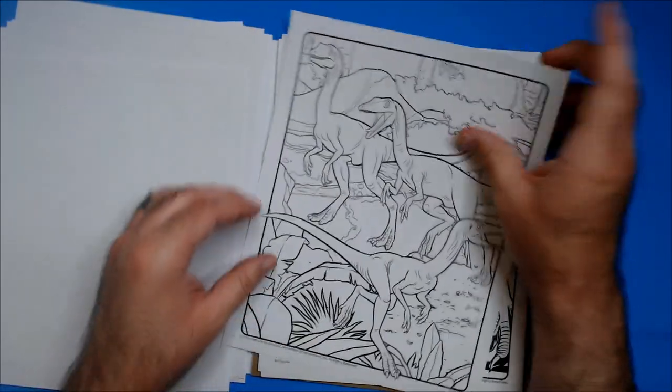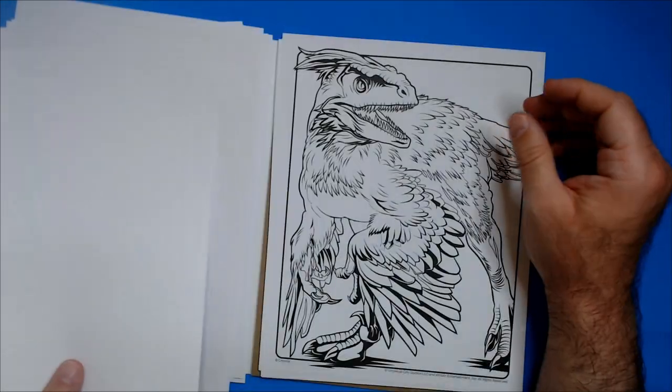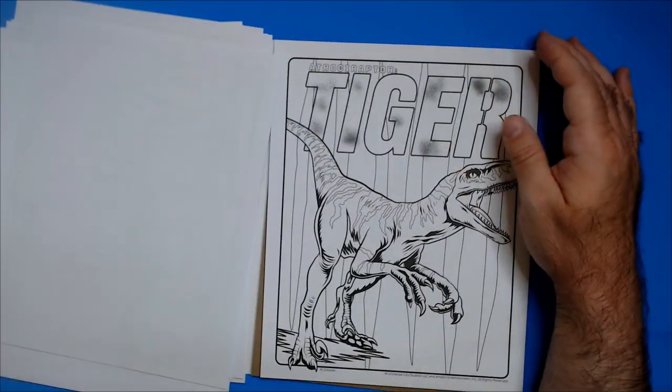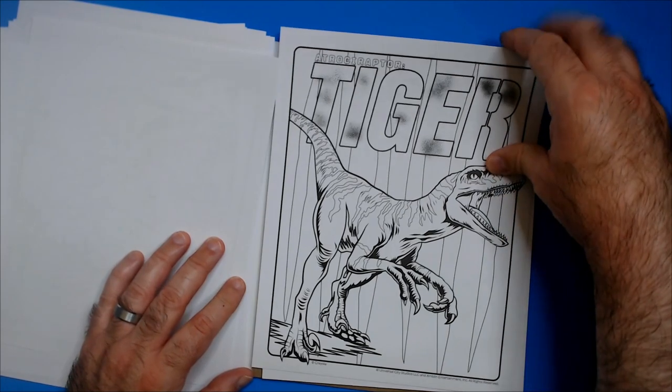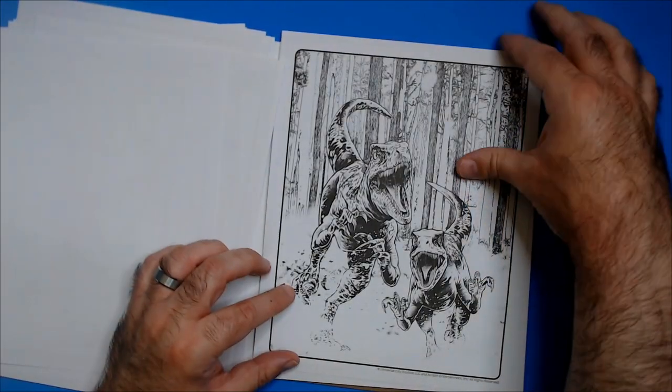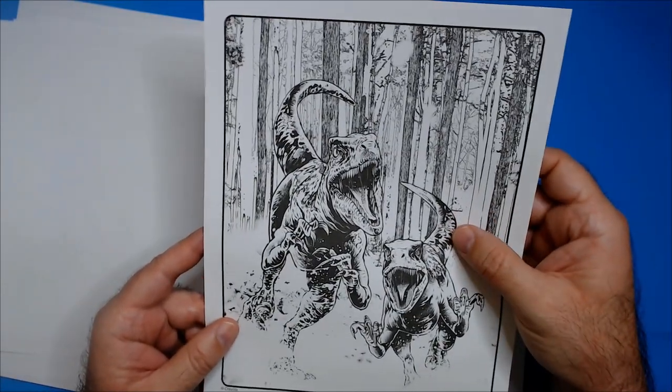Some of these are detailed, like with the lines. Some of them are not as detailed, which I kind of like. I think it's a good mix of easier stuff to color and more time-consuming, detailed stuff as well. Like this. It'd be hard to color that, I think. Looks cool, though.